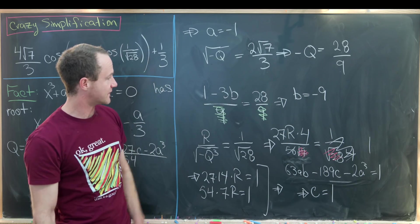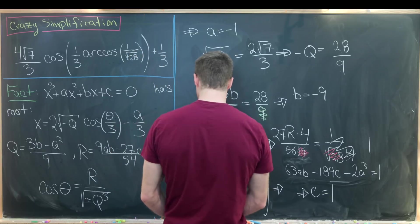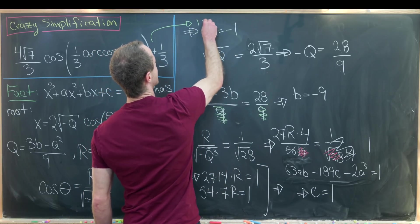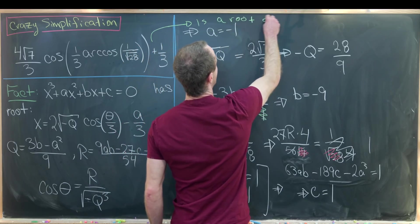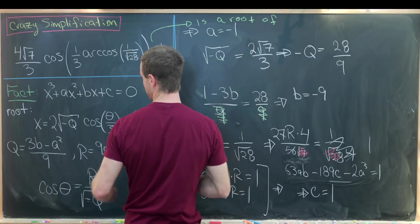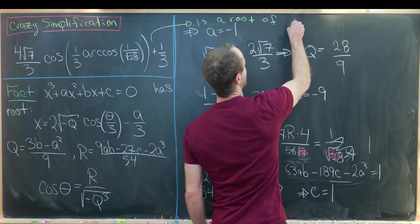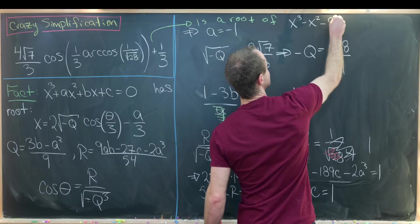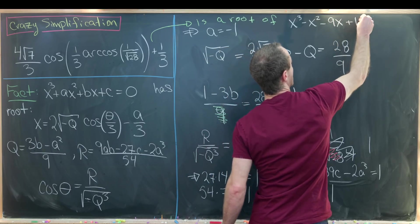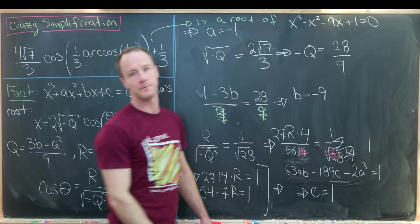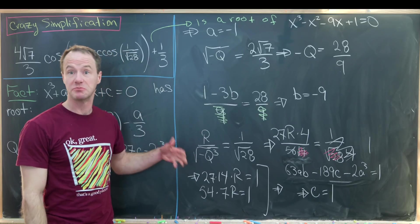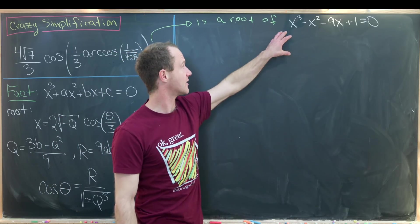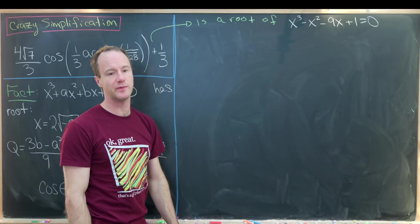We've got values a equals negative one, b equals negative nine, and c equals one. That means this crazy number is a root of the cubic polynomial x cubed minus x squared minus 9x plus one equals zero.